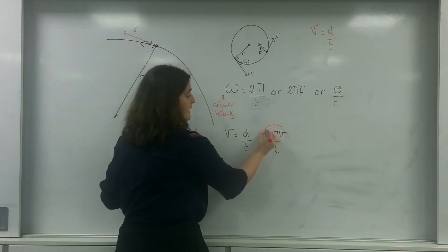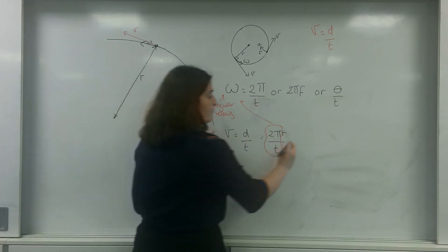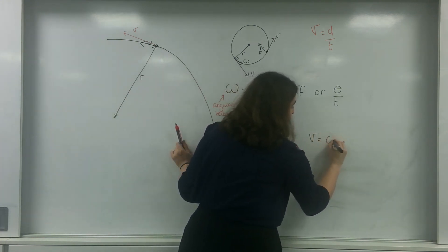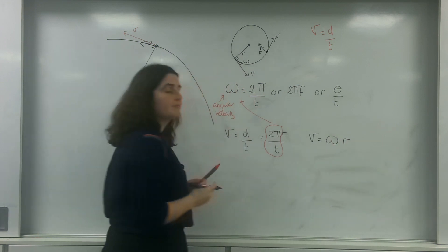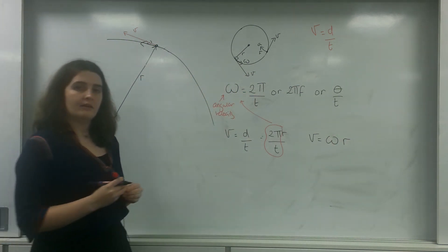2πr divided by time. And as you can see here, this bit here is omega. So, I can write tangential speed as ωr.